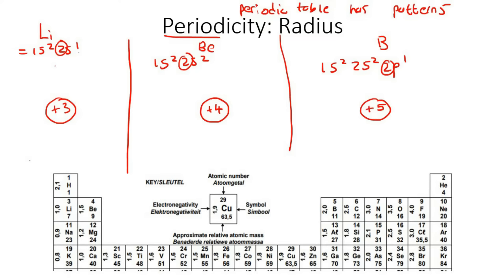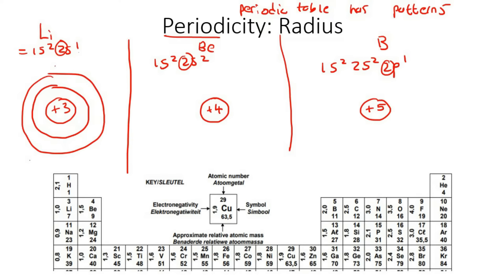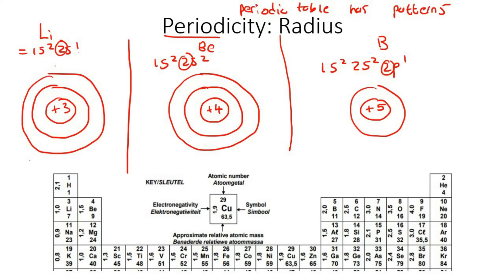For each one, we draw two rows of energy levels because they all have a highest energy level of two. All the electrons would be on the outside, stuck in between those energy levels.